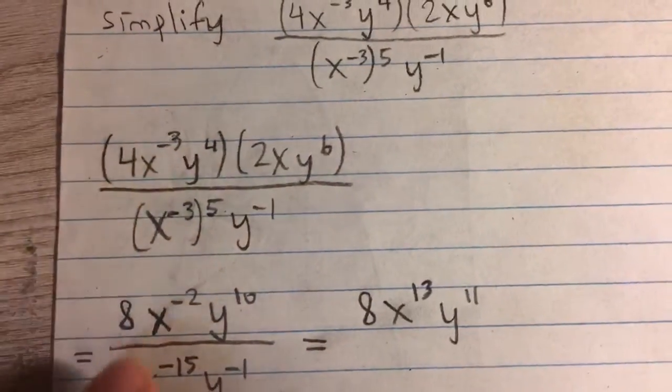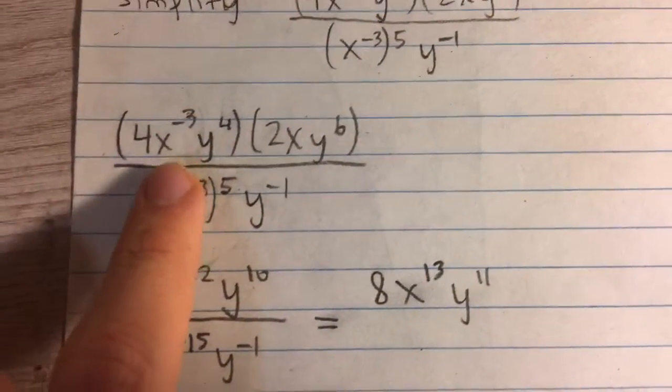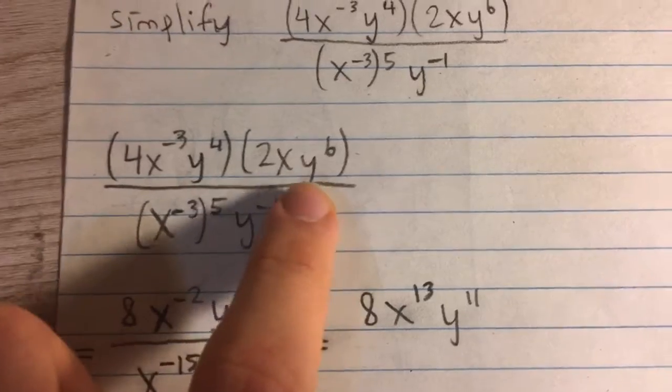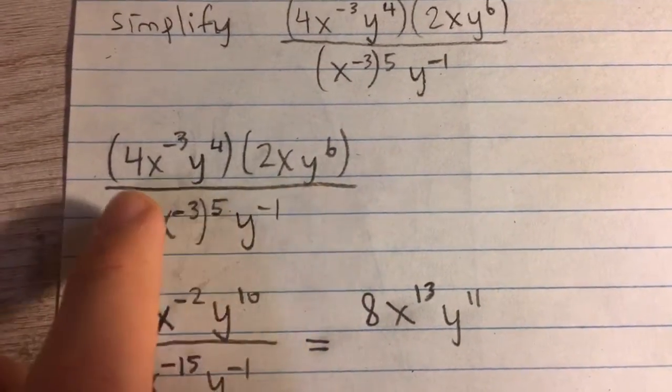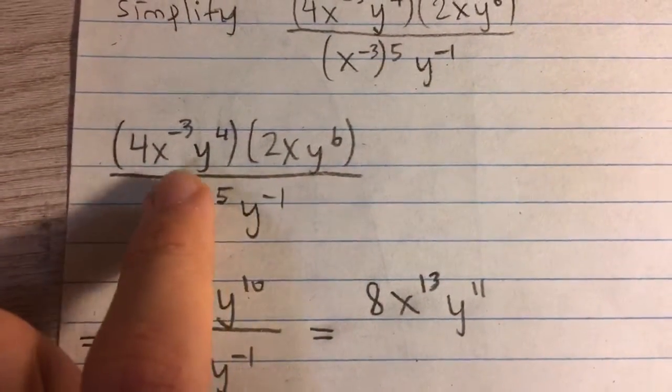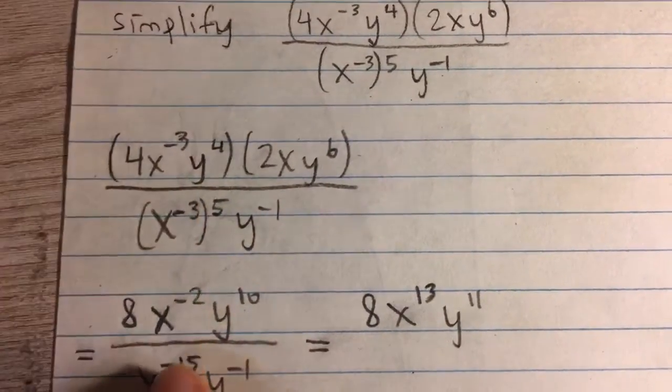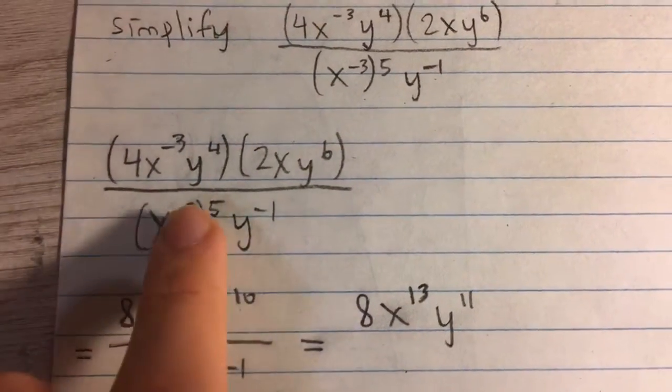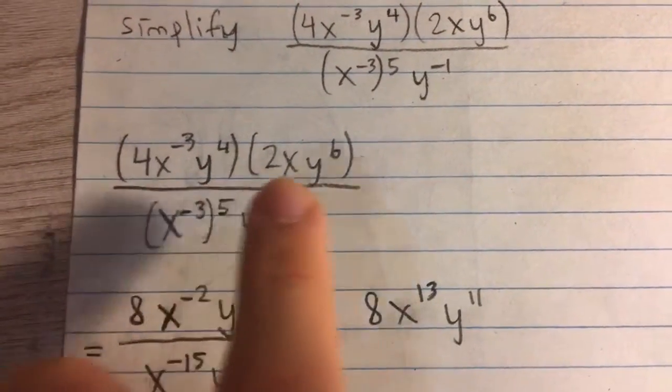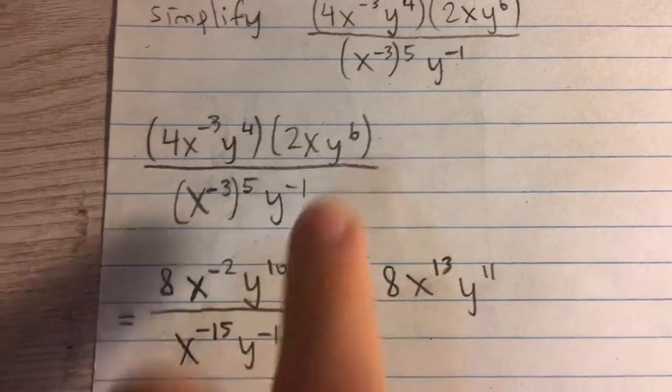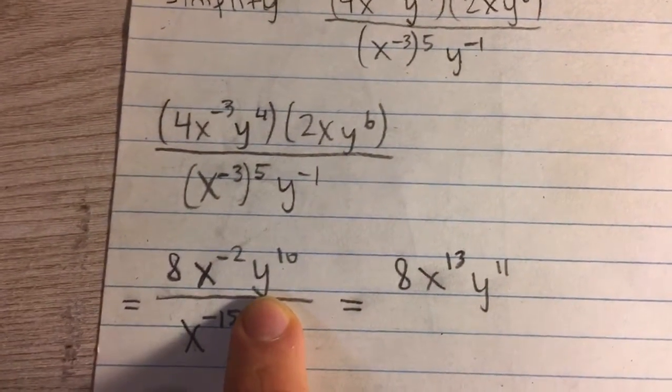So 2 times 4 gives us 8, x to the negative 3 and x to the first power because there's no power listed. When we multiply powers, we have to add the exponents, so it becomes x to the negative 2. And then y, we have y to the 4th times y to the 6th, add the exponents, we get y to the 10th power.